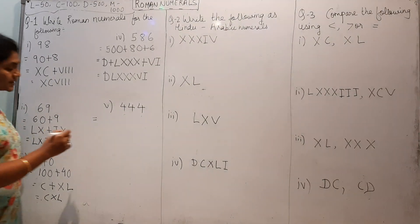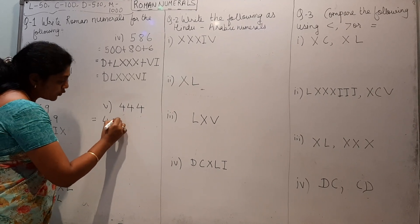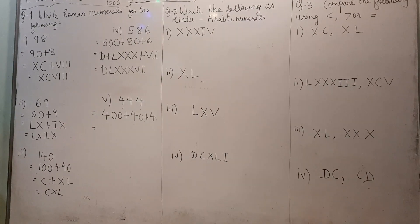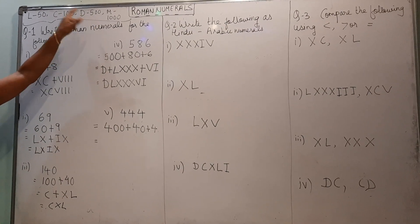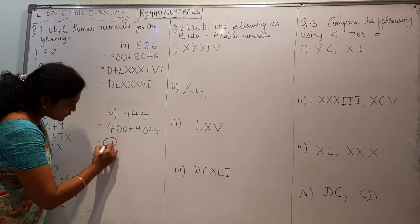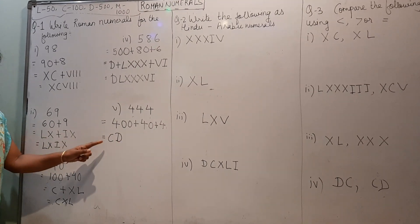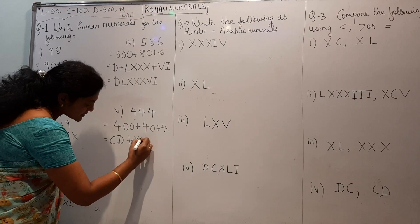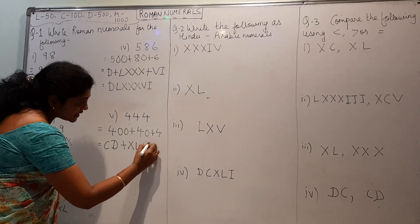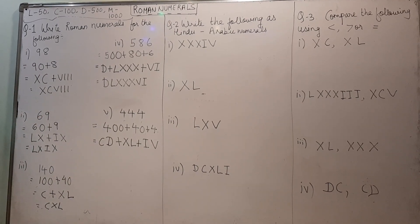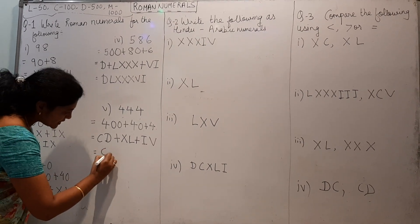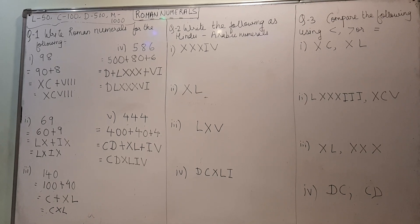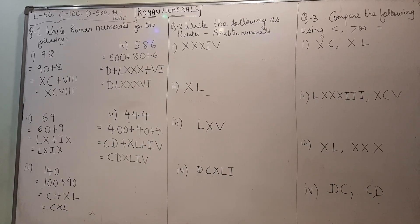Now, 444. This is, again split it. 400 plus 40 plus 4. Now, if you want to write 400, you know for 500 it is D. If you write CD, this will be 500 minus 100, it is 400 plus 40. XL, 50 minus 10. And 4 is IV. Now, combine all these things. So, this will be CDXLIV. Just using the rules, you can write the roman numerals very easily.